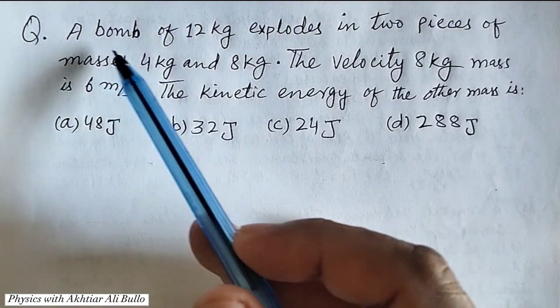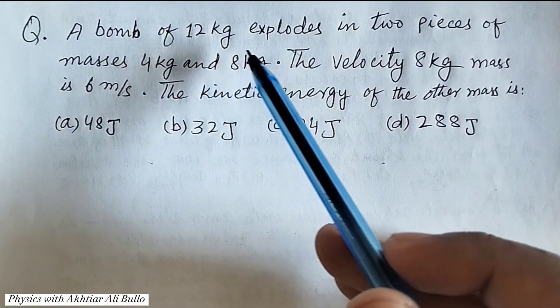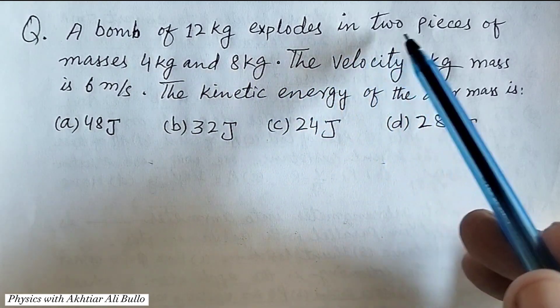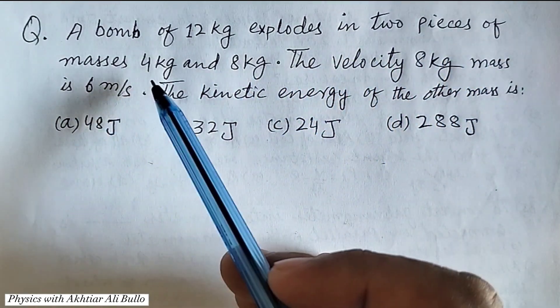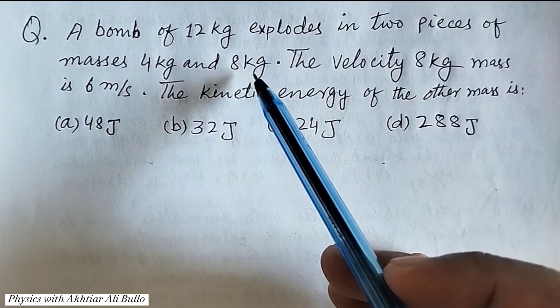The question is: a bomb of 12 kg explodes in two pieces of masses 4 kg and 8 kg.